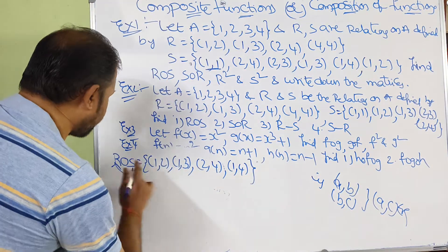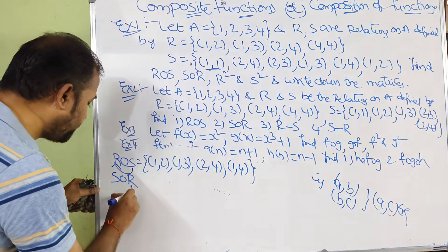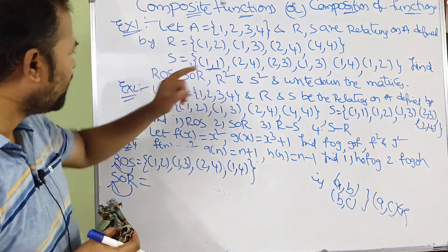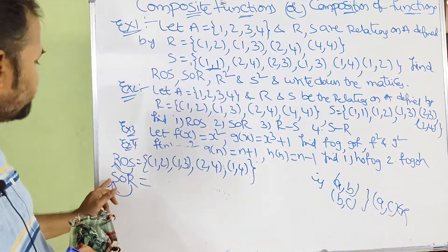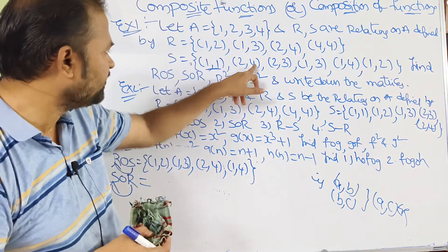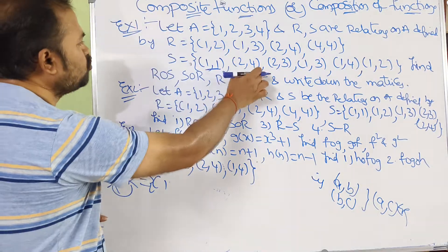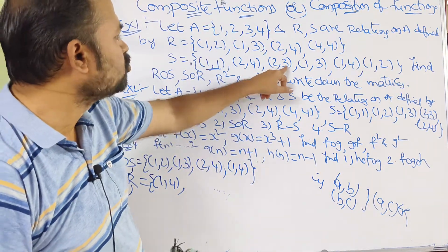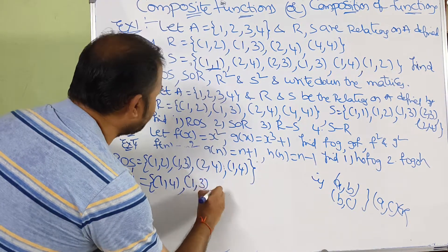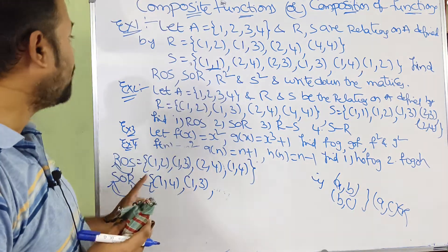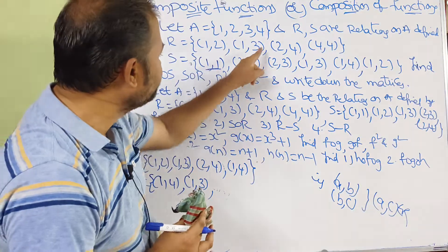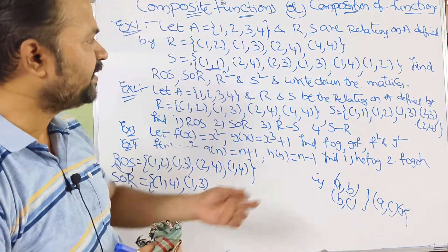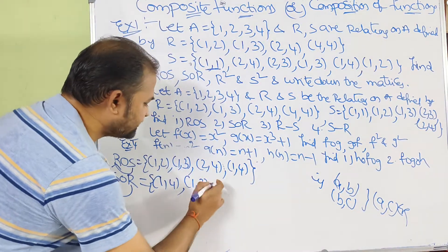Likewise compute S∘R. S∘R means we map from R to S. We select a pair from R, say (1,2). Now select a pair from S which begins with 2. We have (2,4), so (1,2) combined with (2,4) gives (1,4). Next, (1,3): no pair in S begins with 3. Next (2,4): no pair in S begins with 4. So the result of S∘R is (1,4).